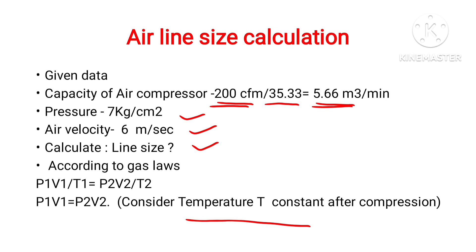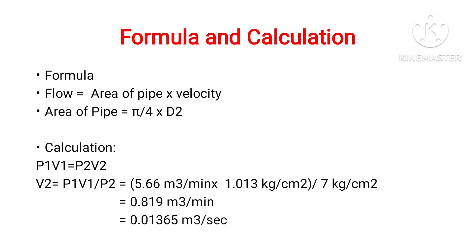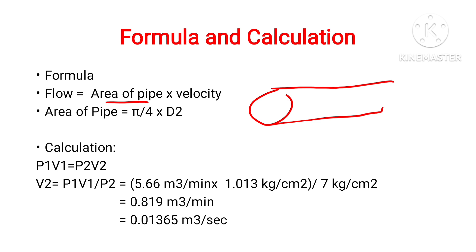Now we will see the formula and calculation. The flow formula is: Flow equals Area of Pipe multiplied by Velocity. Here, the area of the pipe is the cross-sectional area of the pipe, calculated as Pi over 4 times D squared. This is our Boyle's Law equation, and we will put all these values into this equation.